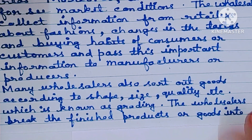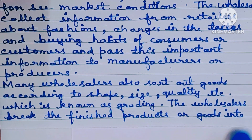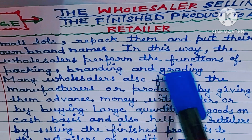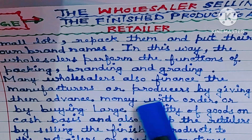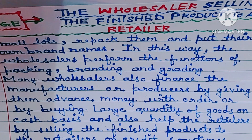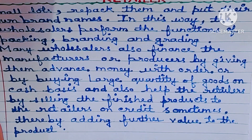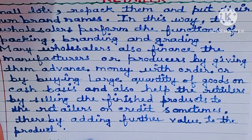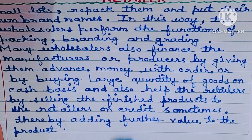Moreover, wholesalers foresee market conditions and collect information from retailers about fashions, changes in tastes and buying habits of consumers, and pass this important information to manufacturers or producers. Many wholesalers also sort out goods according to shape, size, quality, etc., which is known as grading. The wholesalers break finished products into small lots, repack them and put their own brand names, thereby performing the functions of packing, branding and grading. Many wholesalers also finance the manufacturers by giving advance money or buying large quantities on cash basis, and help retailers by selling finished products on credit — thereby adding further value to the product.